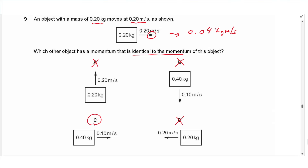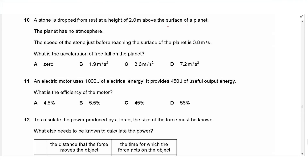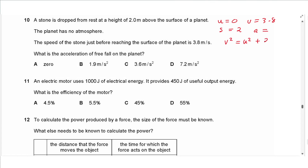Question 10 says: a stone is dropped from rest at a height of 2 meters above the surface of a planet with no atmosphere. The speed just before reaching the surface is 3.8 meters per second. What is the acceleration of free fall? We have u = 0, v = 3.8, and distance = 2 meters. Using v² = u² + 2as: 3.8² = 0 + 2 × a × 2, then divide both sides to find a.